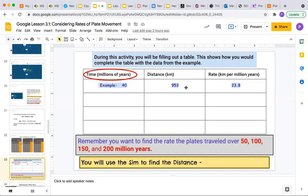That's the example. This isn't one of the years that you have to do. You have to do 50, 100, 150, and 200 million years.